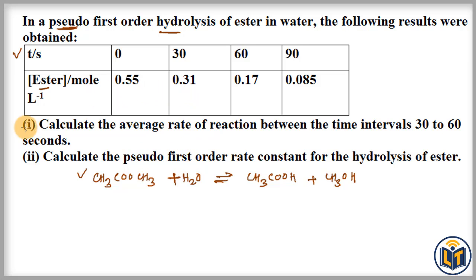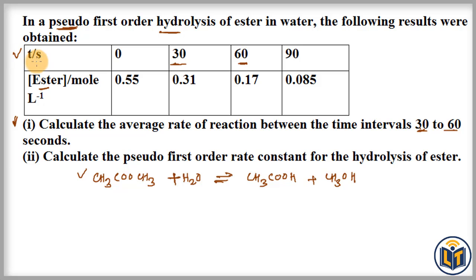Now let's move on to the first part of the question. The first part says: calculate the average rate of reaction between the time intervals 30 to 60 seconds. Time is given in seconds and the concentration of the reactant is given in molarity (mole per litre).